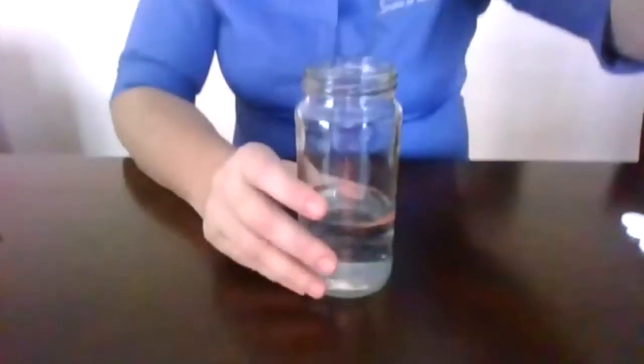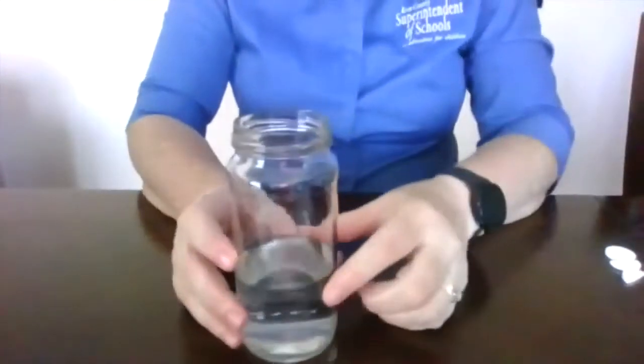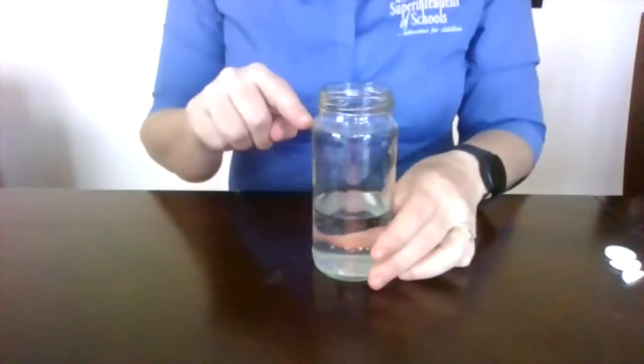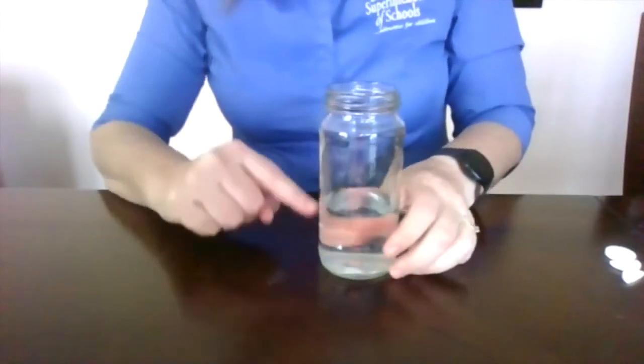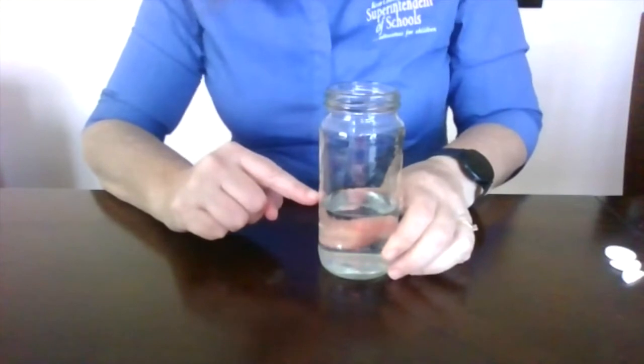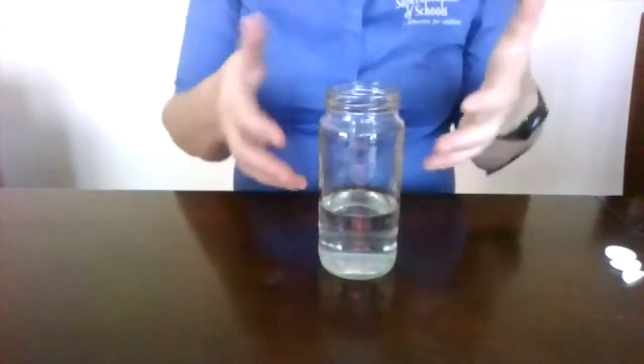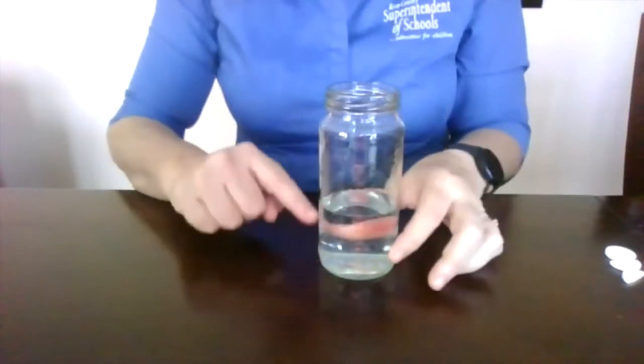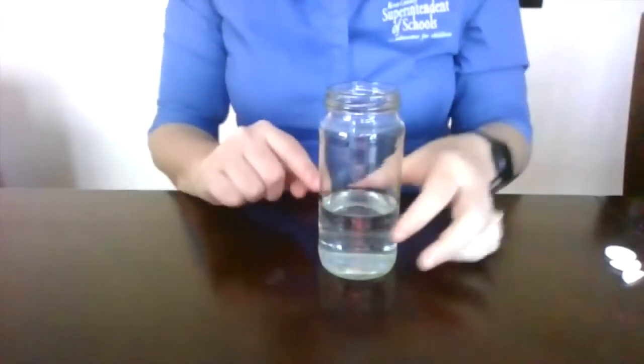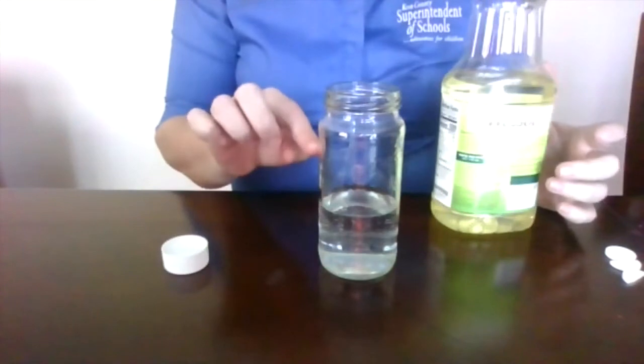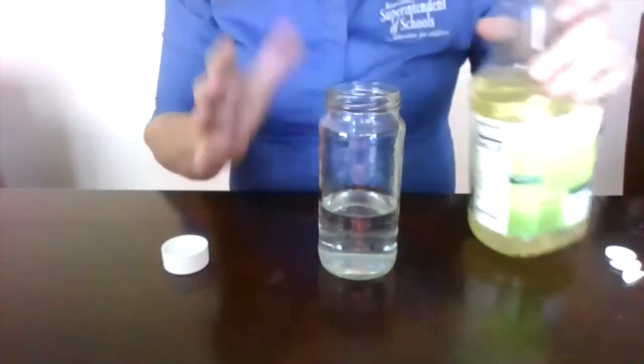So what we're going to be looking at is we have our jar and we have our water. And so what we want to do is we don't want to fill up the jar all the way. So the water is about less than half.